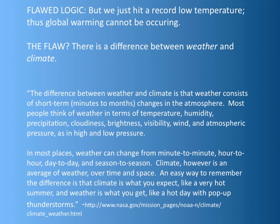The average person might protest and say, 'I don't see how this can be possible — we just had a blizzard at a record low temperature, therefore global warming can't really be happening.' The flaw in this logic is a confusion between the terms weather and climate. When we talk about global warming, we are not talking about weather on a day-to-day basis — we are talking about climate.